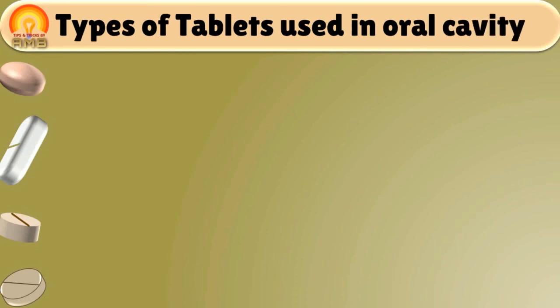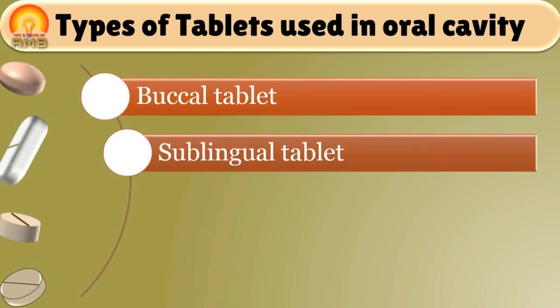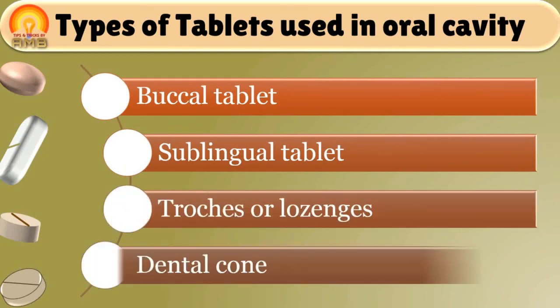Tablets used in oral cavity are further subtyped as buccal tablets, sublingual tablets, troches or lozenges, and dental cones. We will discuss these types one by one.